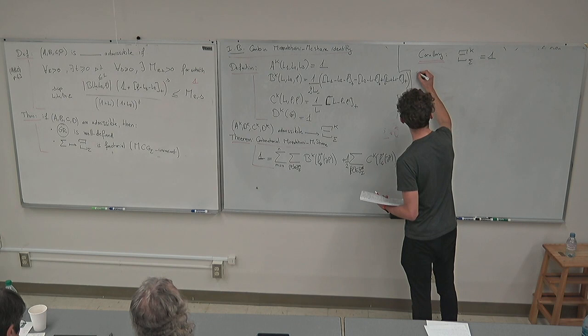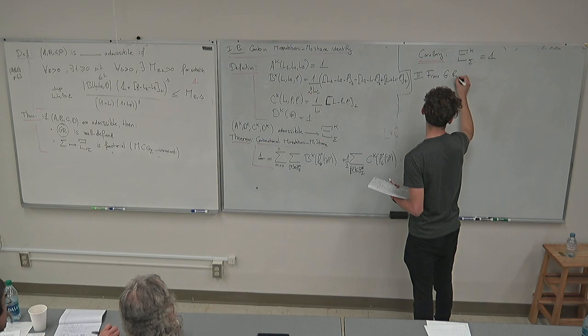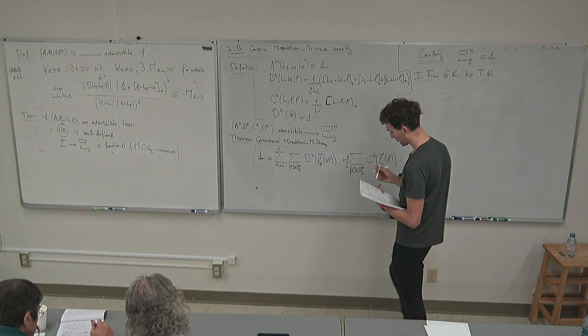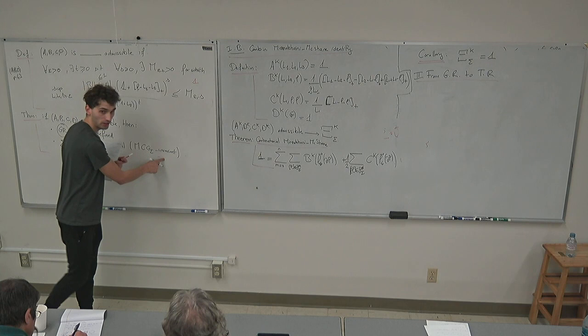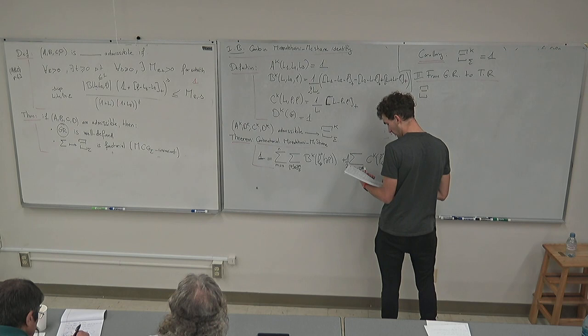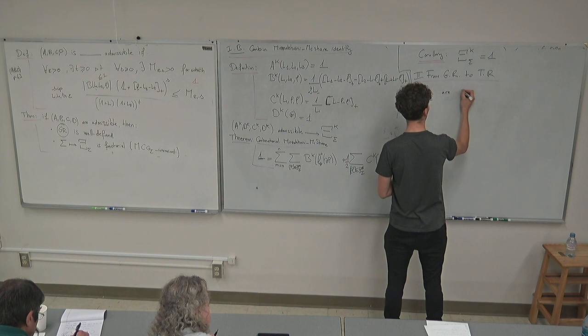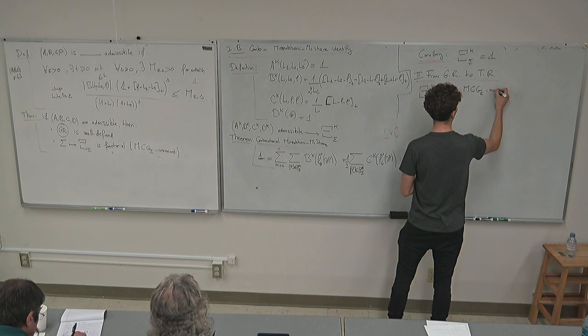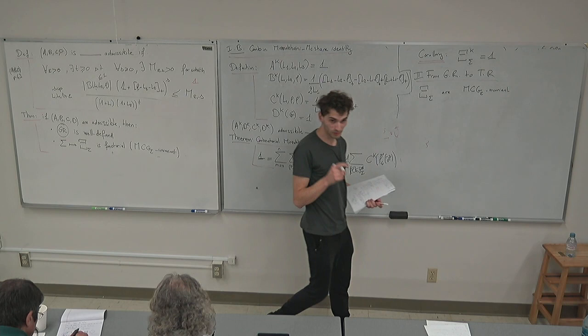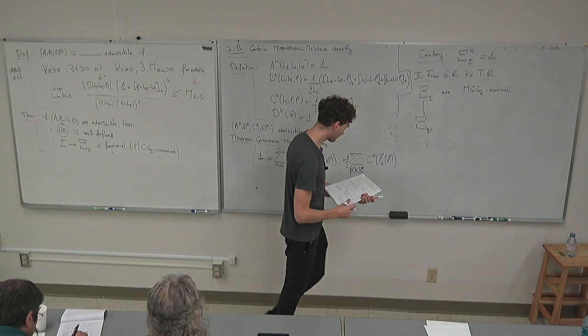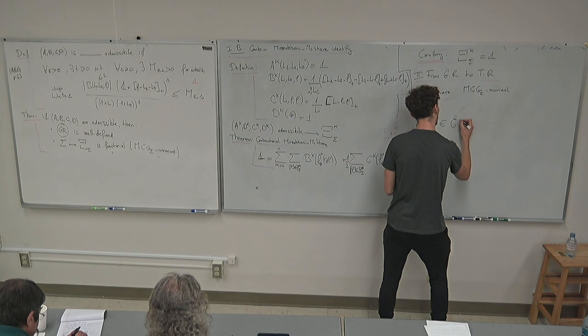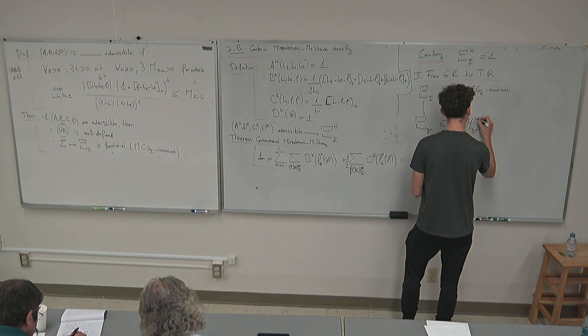Corollary: Xi_K(sigma) = 1. Now let me go to the second part: from GR to TR. From the theorem that GR is well-defined, the Xi_K(sigma) are mapping class group invariants, so they descend to functions on the combinatorial moduli space. We can define Psi_{g,n} — where (g,n) is the type of sigma — as a continuous function on M_{g,n}^{comb}.